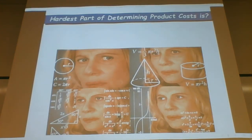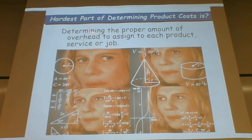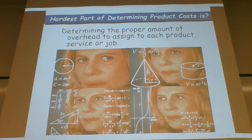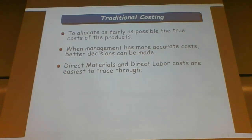The hardest part of determining product cost is determining the proper amount of overhead to assign to each product, service, or job. Direct materials and direct labor are generally not difficult to determine at all, but factory overhead is sometimes very difficult. The traditional costing methods we have looked at over the past few chapters are not always going to provide us with accurate enough information.